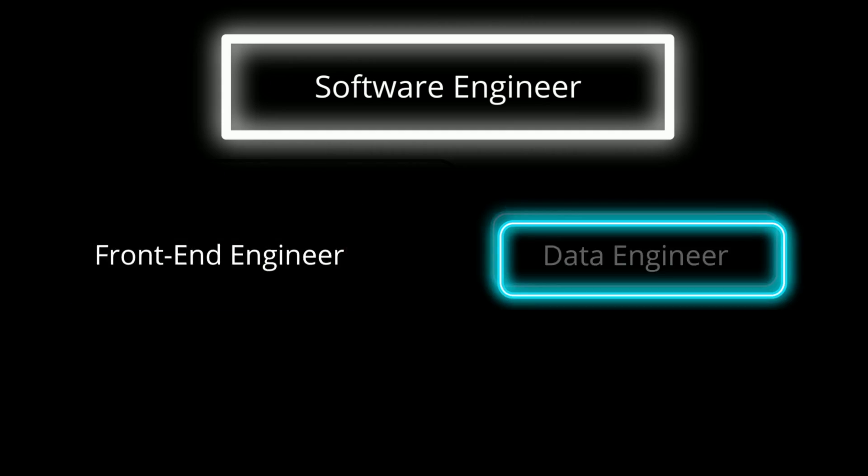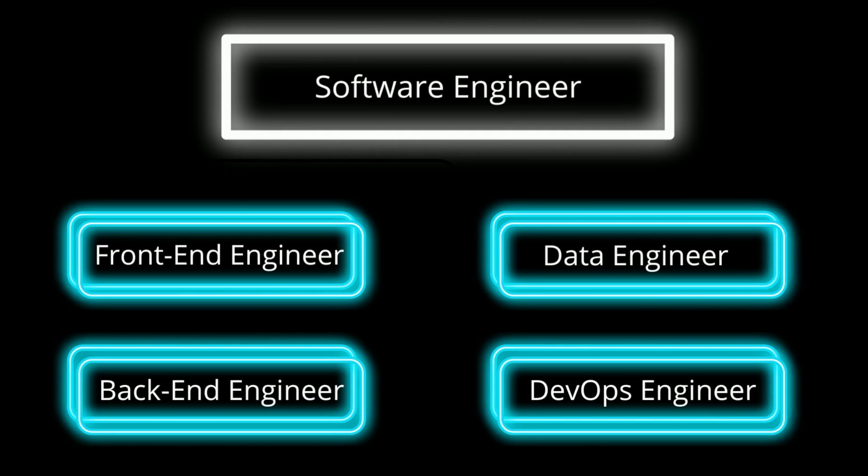You can think of a software engineer as a very broad title that encompasses one or more domains of software engineering. What are these domains? Software engineering has many different domains, but some of the domains that a software engineer could work in are front-end engineering, back-end engineering, data engineering, and even DevOps.